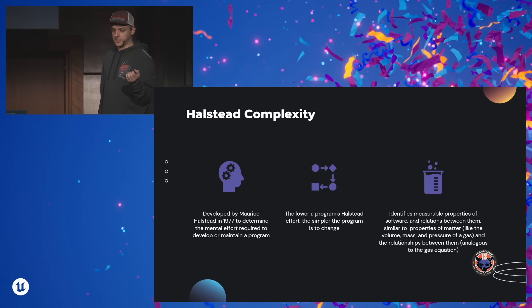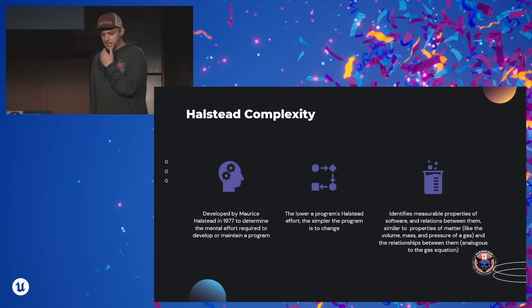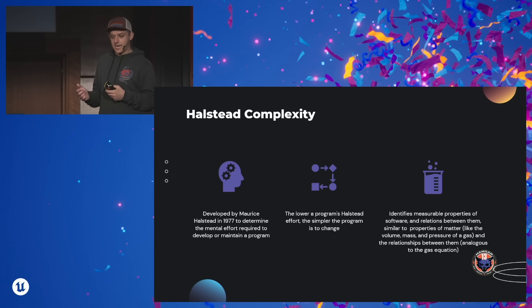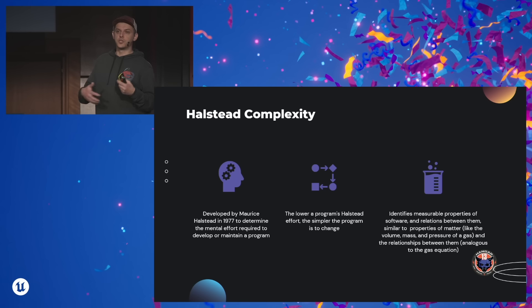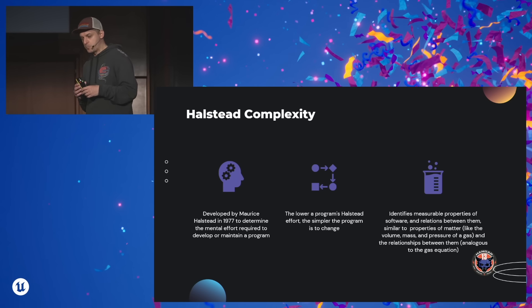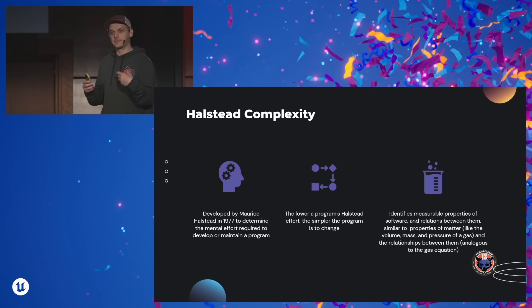Let's look at another one — the so-called Halstead complexity. Again, invented in the 70s by someone called Maurice Halstead. It's an interesting method to determine the effort and difficulty of understanding a program and maintaining it. The lower the effort, the simpler the program would be to change and maintain. Interestingly, when he was introducing it, he tried to find an analogy with properties of matter — like volume, mass, pressure — and the relationship between them, similar to the gas equation. He tried to mimic this with properties and relationships of software.